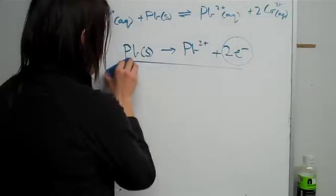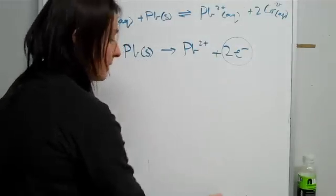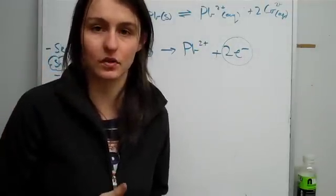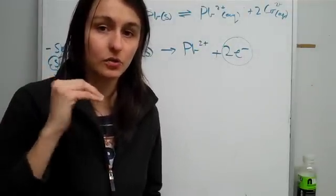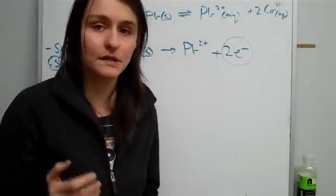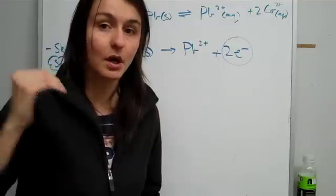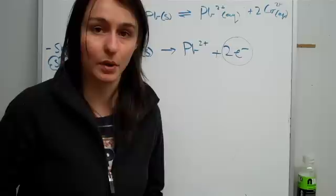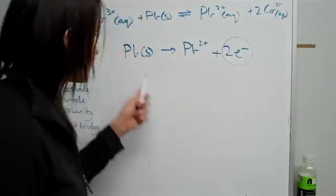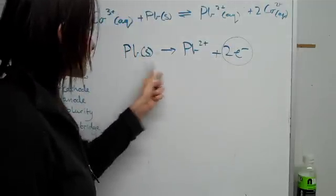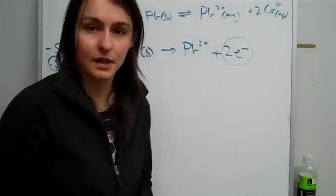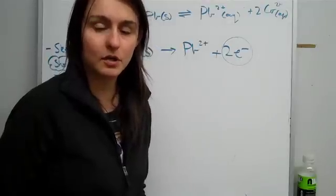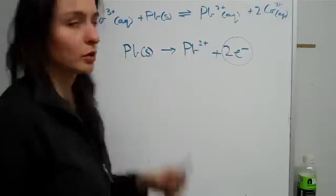Now if you remember from your electrochemical series, basically you would know that it's ordered in how much something wants electrons. So there's a huge list of different components and the things at the top want electrons most. The things at the very bottom don't want electrons at all and would be happy to give them away. So as you can see, lead is giving away its electrons.